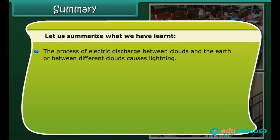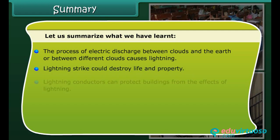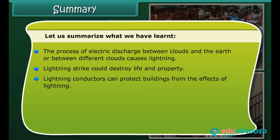The process of electric discharge between clouds and the earth, or between different clouds, causes lightning. A lightning strike could destroy life and property. Lightning conductors can protect buildings from the effects of lightning.